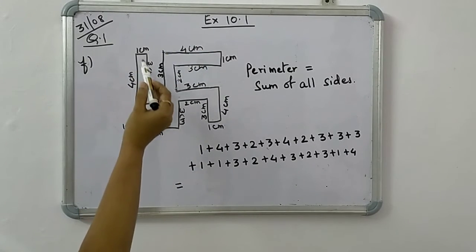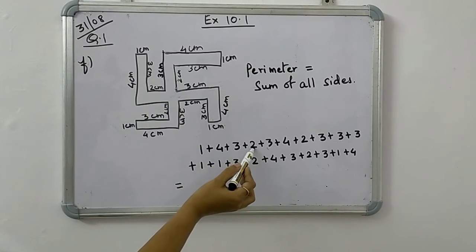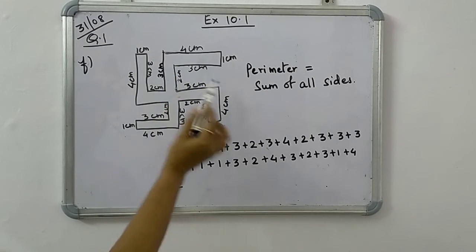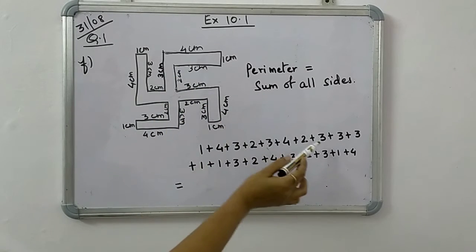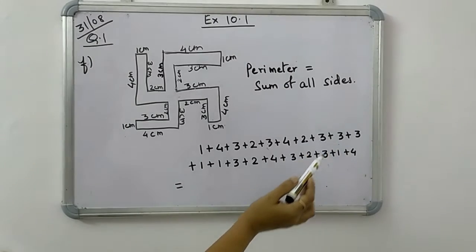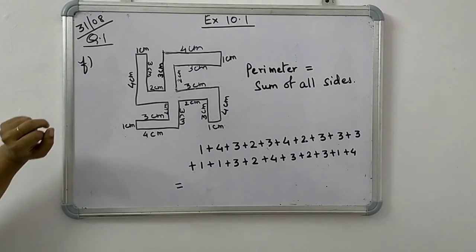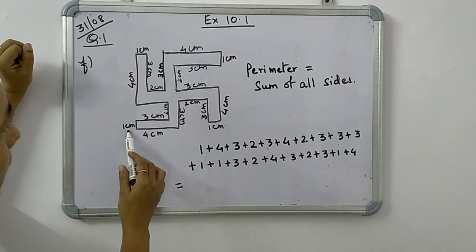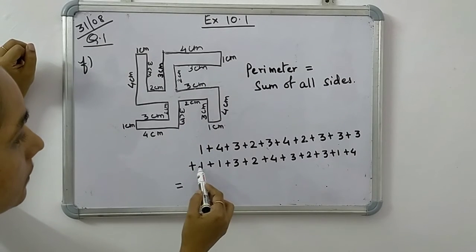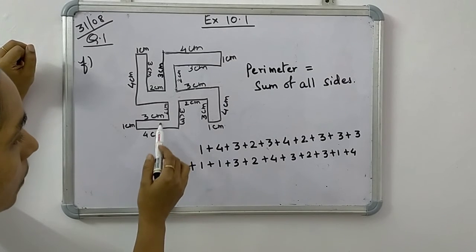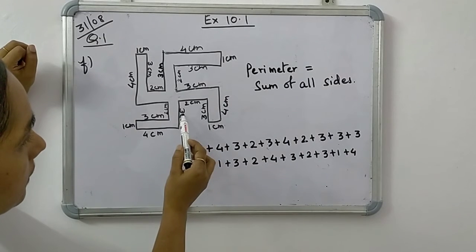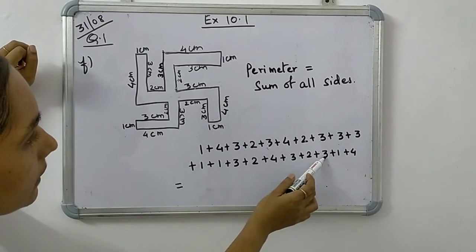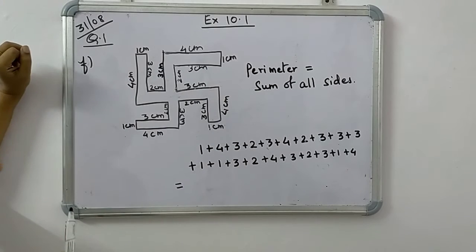So we'll add this upper part. Start above the part is 1 plus 4 plus 3, 2 then 3 then 4 then 2, this 3, 3, 3, 3, then this 2, 1, then 3, 2, 4, then 3, 2, 3, 1, 4.